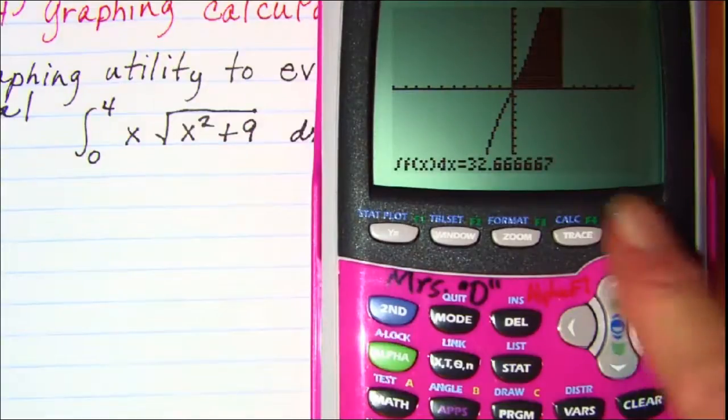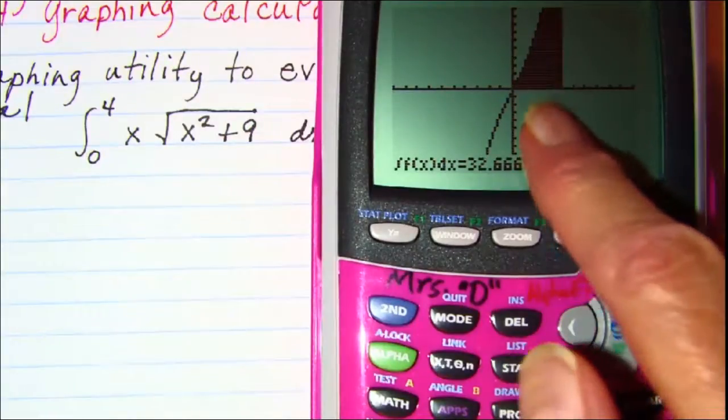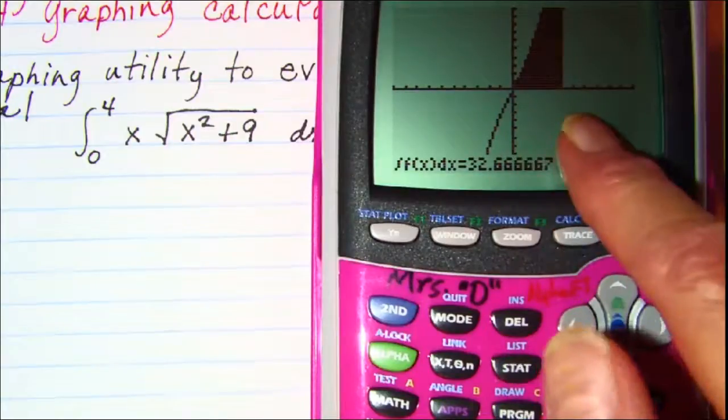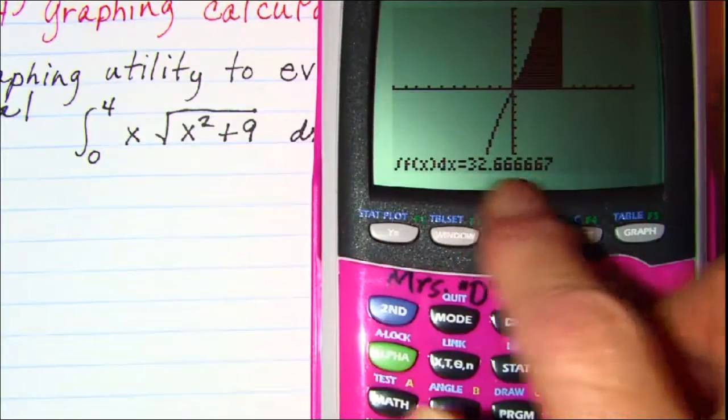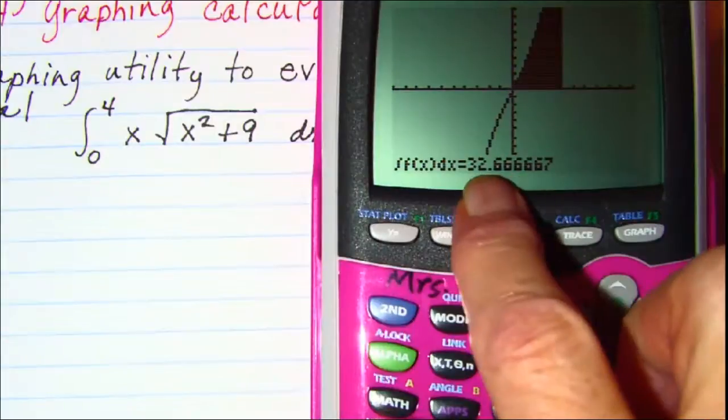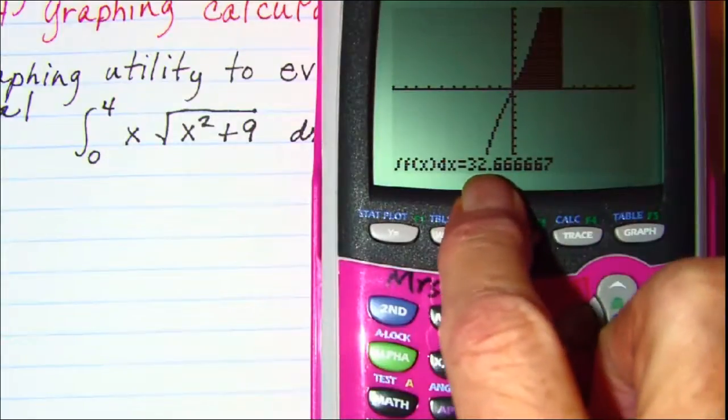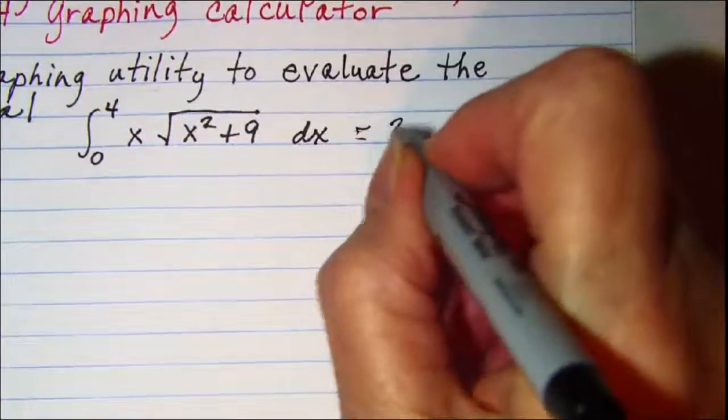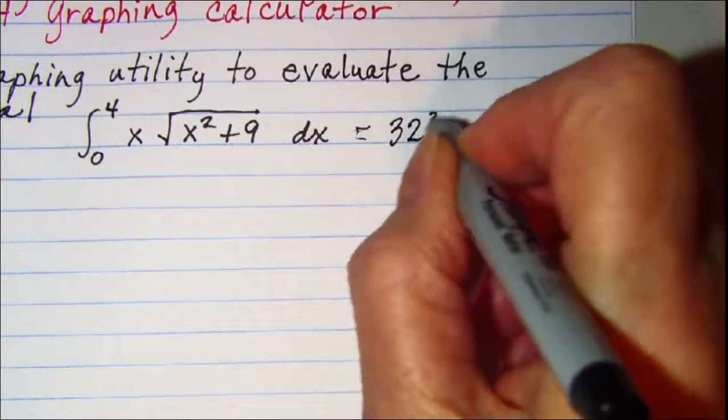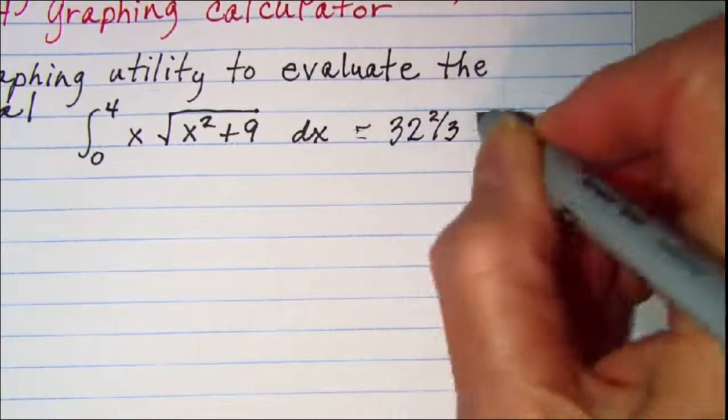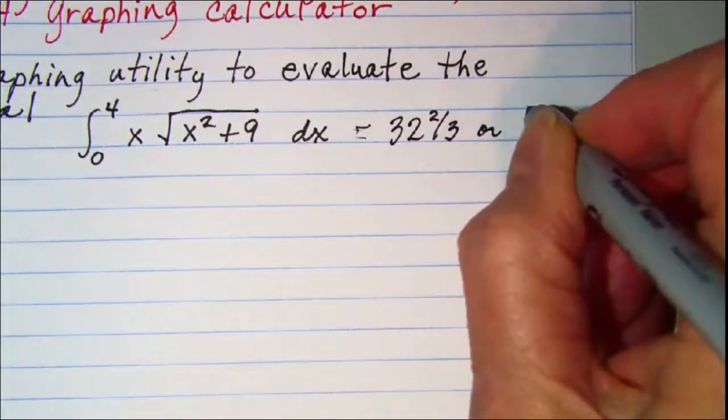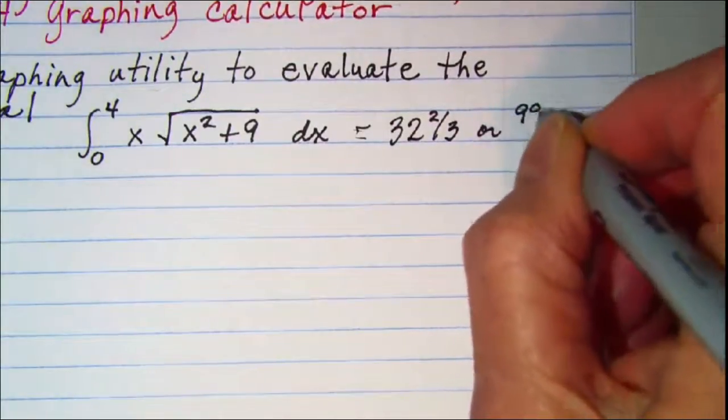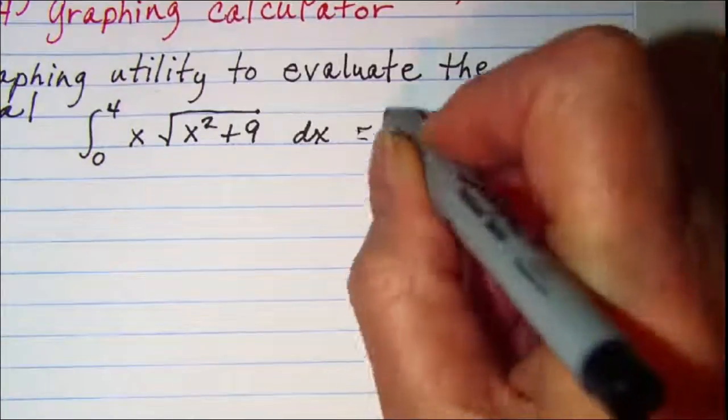Notice that the calculator shades the area under the curve from 0 to 4 and gives us the area. We can see it's 32 and 2 thirds, or 98 thirds.